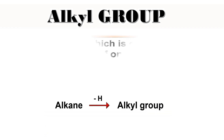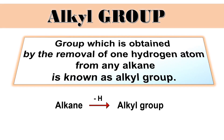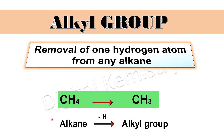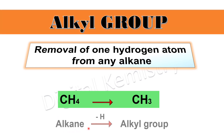Chaliye jaante hain alkyl group. By definition, group which is obtained by the removal of one hydrogen from any alkane is known as alkyl group. Alkyl group ko chemistry mein is tarah define kiya jata hai ki jab kabhi kisi bhi alkane mein se one hydrogen remove kiya jata hai to iske result mein alkyl group ki formation hoti hai.